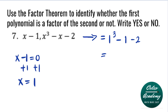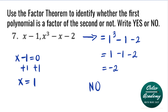Simplifying: 1 to the third is 1, minus 1 minus 2. 1 minus 1 is 0, and 0 minus 2 is negative 2. Since the value is not 0, that means x minus 1 is not a factor of x cubed minus x minus 2.